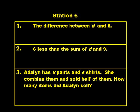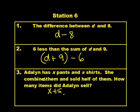And our final station, station six. Number one, the difference between d and eight. Number two, six less than the sum of d and nine. And our last one, and this one has a question along with it as well. Number three, Adeline has x pants and s shirts. She combines them. I'm missing the letter s here. Sorry about that. She combines them and sold half of them. How many items did Adeline sell? So she combines her shirts and pants. She sells half of them. So the question was, how many items did Adeline sell? She sold half.